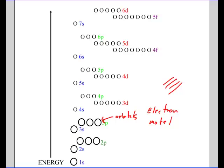In other words, electrons fill the lowest energy level first. On the diagram, energy increases as you go up, so the 1s orbital has the lowest energy of all. Then 2s has a little more energy, then 2p has more energy, and so on. When electrons are filling orbitals, they fill up the lowest energy level first.